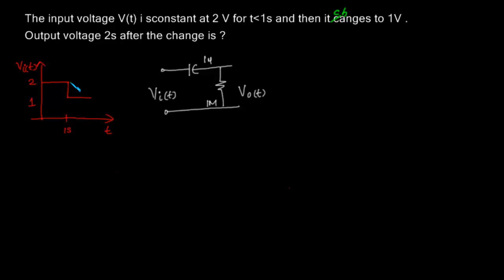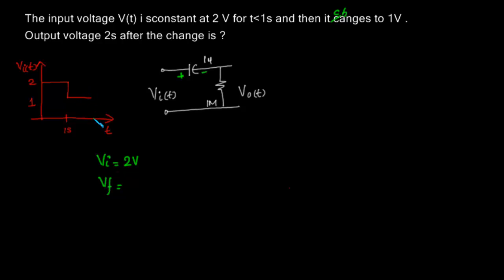Between 1 volt and 2 volt we are not sure whether it has reached its steady state, so we have to do a transient analysis. The initial voltage across the capacitor will be 2 volts — it has been at 2 volts for a long time, so the capacitor would have been fully charged, positive here, minus here, 2 volts. V_initial is 2 volts. If it reaches steady state with the new input, V_final will be 1 volt.